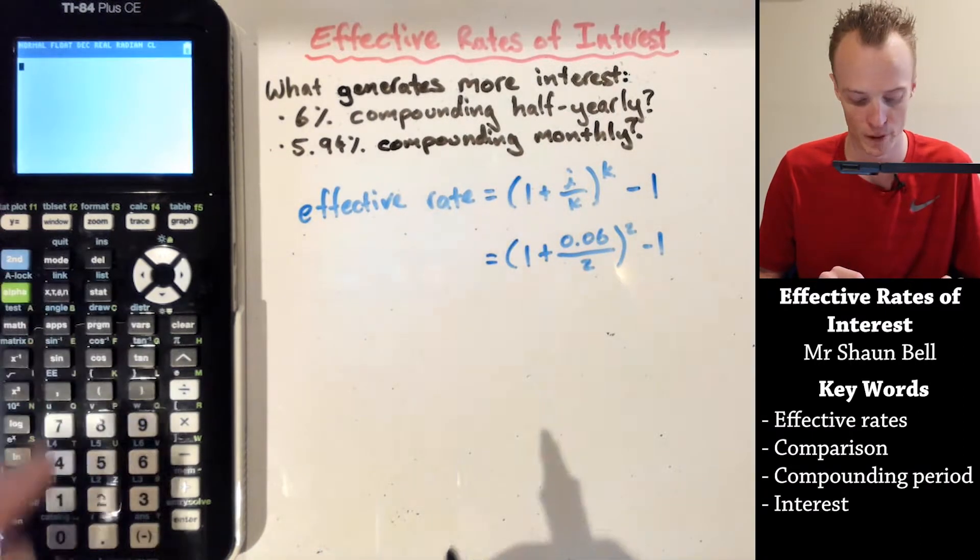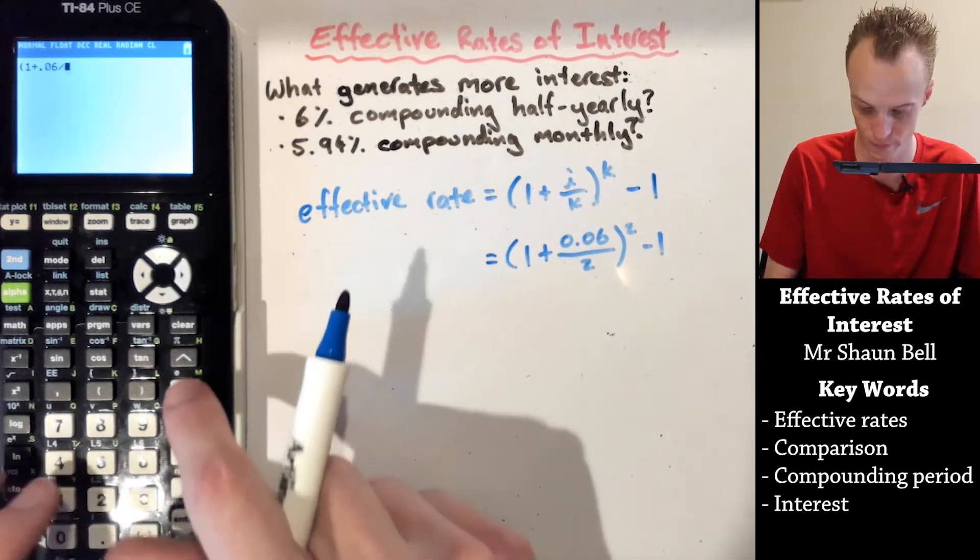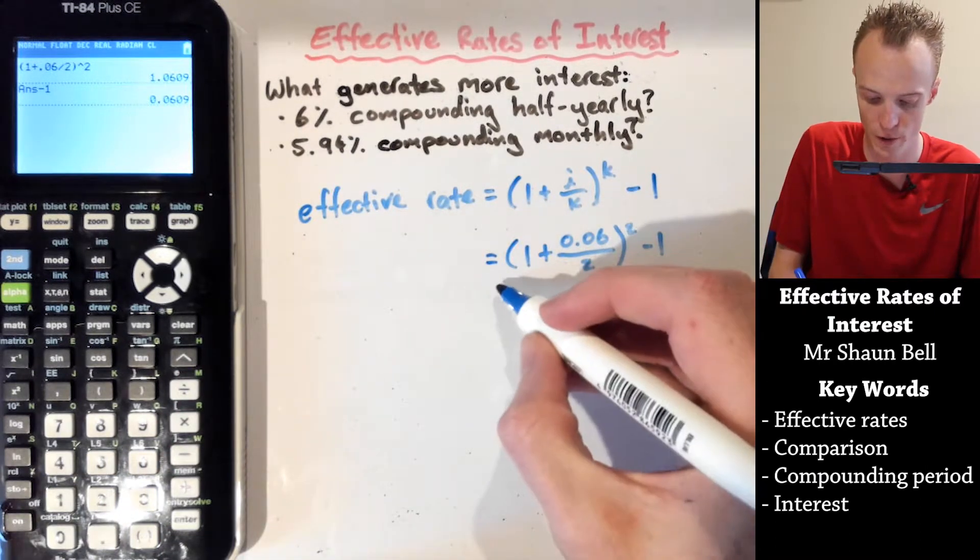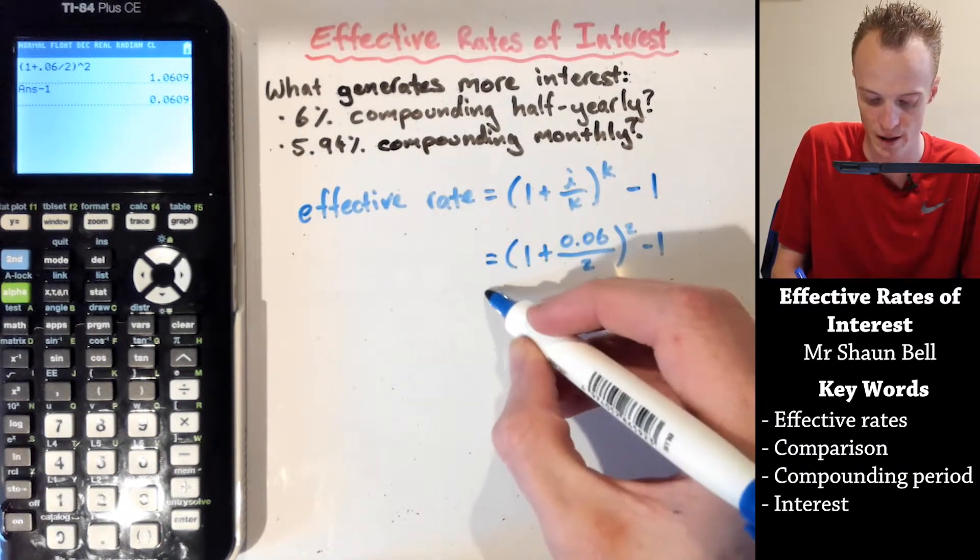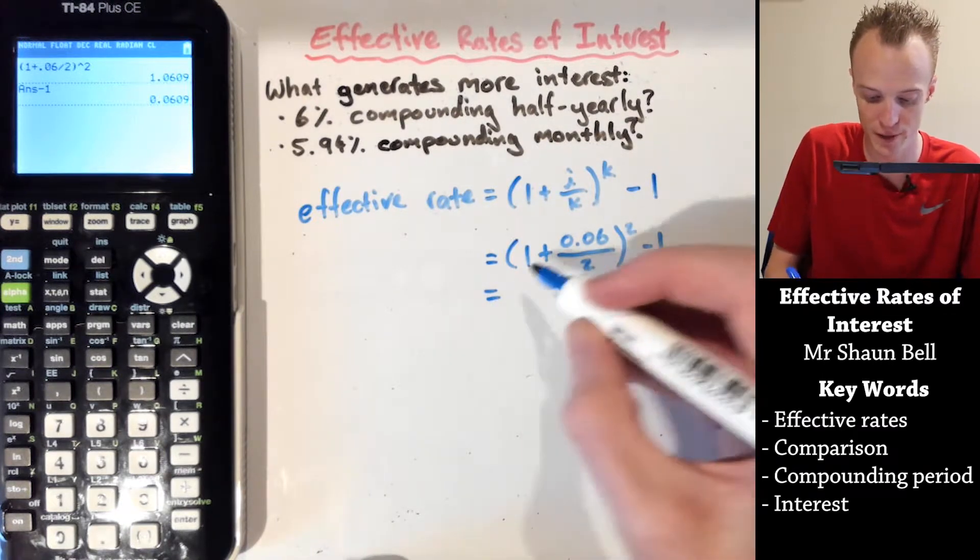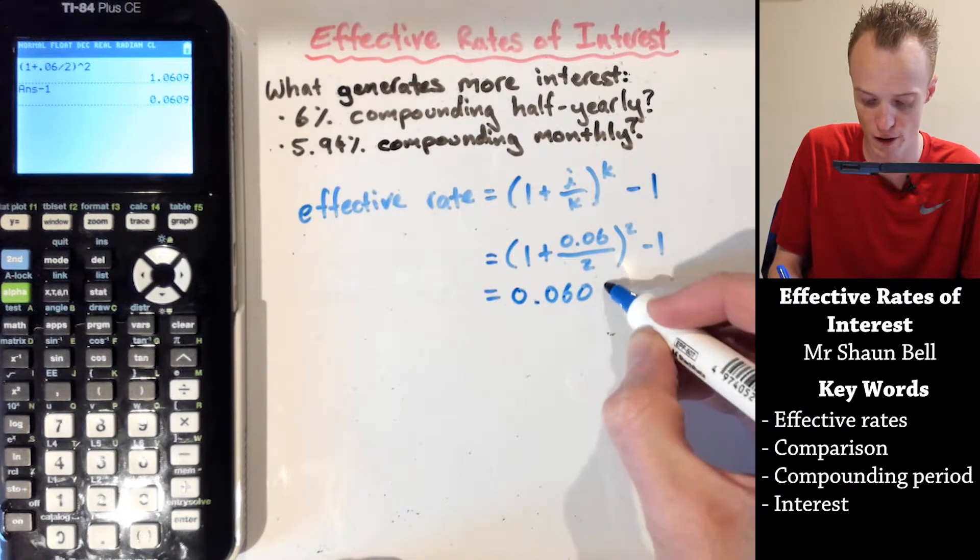So if we use the calculator to quickly input this, and then subtract 1 from the answer, I would find that the 6% interest rate compounding half-yearly had an effective interest rate of 0.0609, which was 6.09%.